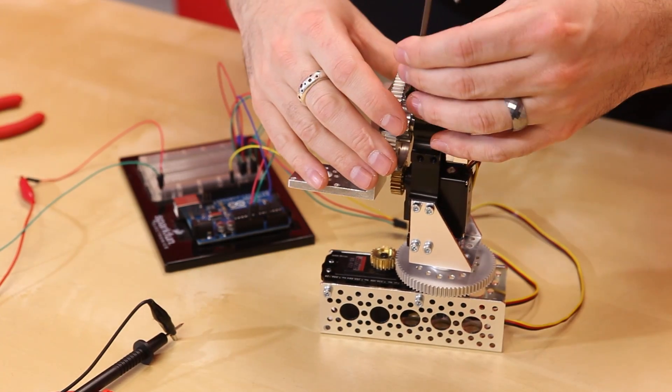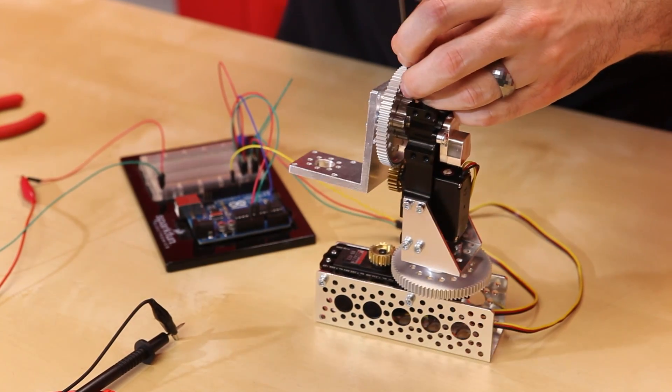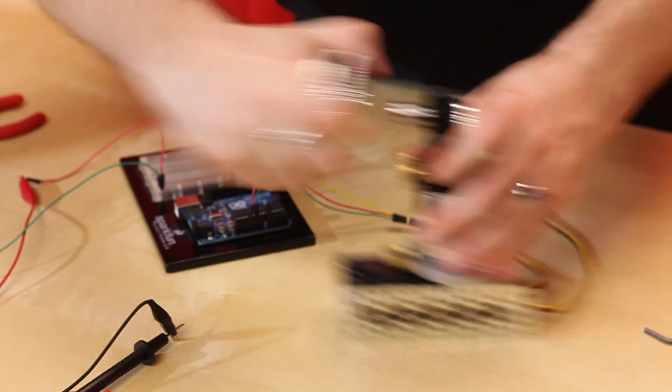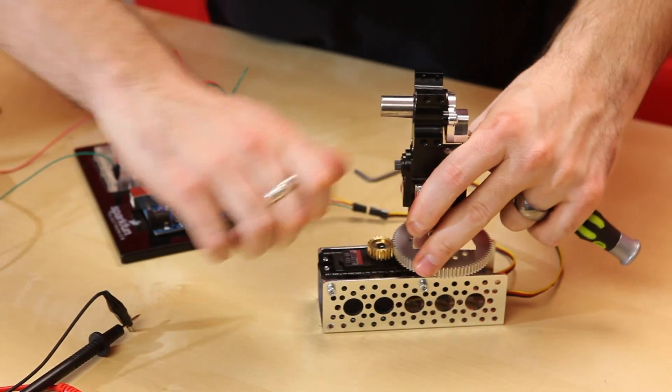The first thing that we need to do is take off some of these extra components so we can have access to the servo. We're going to turn off the power supply, take off the main gear, and then also take off the pinion gear after that.